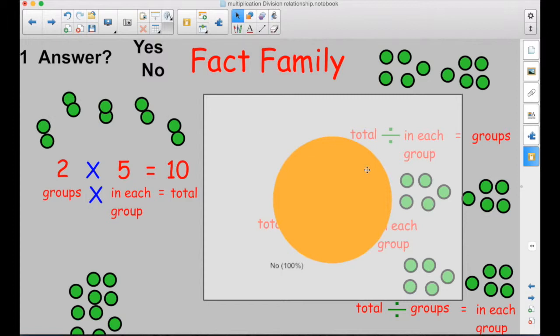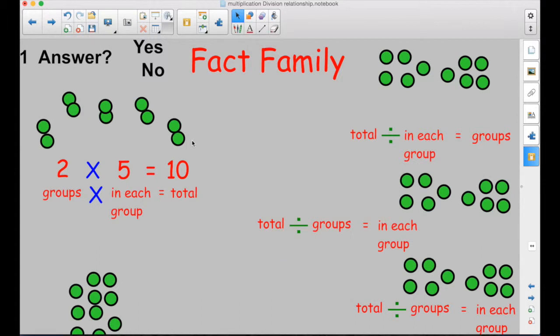If 38% said yes, that was correct, I may say, all right, someone who said no, would you like to explain your thinking? Someone who said yes, would you like to explain your thinking? And then at the end, I would give them the correct answer or have someone who said no come up and redo it.